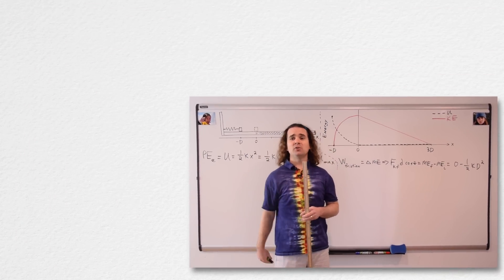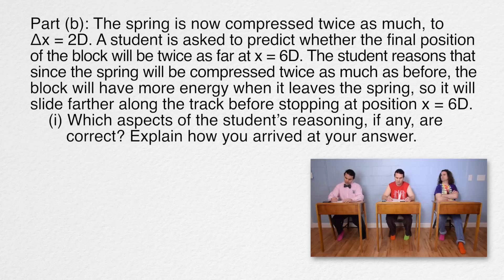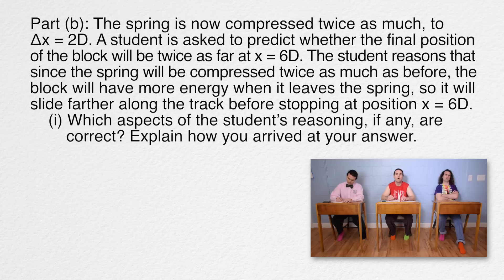The situation now changes. The spring is now compressed twice as much to delta x equals 2D. A student is asked to predict whether the final position of the block will be twice as far at x equals 6D. The student reasons that since the spring will be compressed twice as much as before, the block will have more energy when it leaves the spring so it will slide farther along the track before stopping at position x equals 6D. Part B-i: which aspects of the student's reasoning, if any, are correct? Part B-ii asks about incorrect aspects. Bo, could you answer the correct parts only?